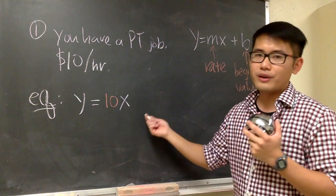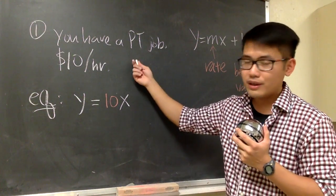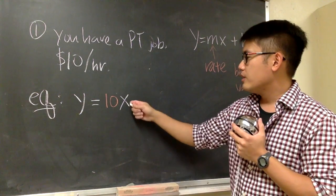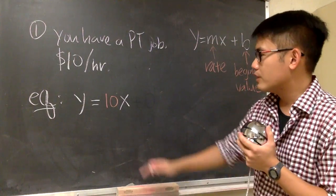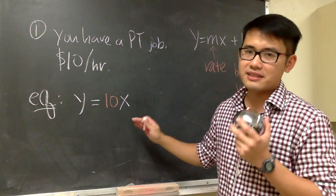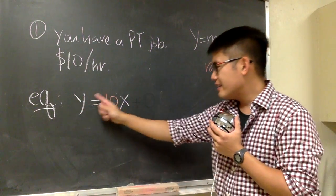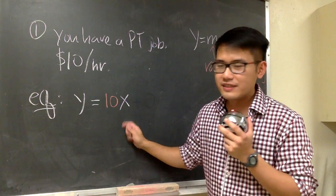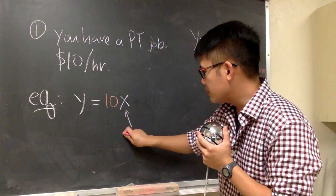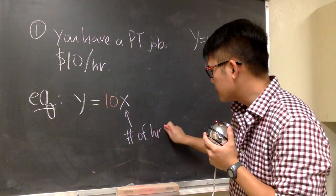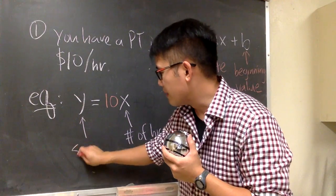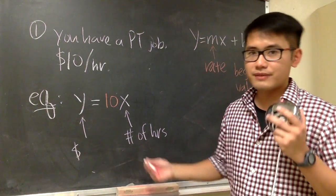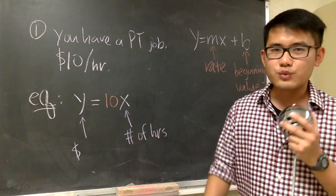And what do we have for the b value? Well, 0 in this case, because if I don't work, I'm not going to get paid. Do we need to put down plus 0? We don't, right? So, y is equal to 10x. This is it. In this case, the x will stand for the number of hours that we work, and then the y right here is the money that you get. That's it. And let's look at the next one.